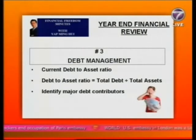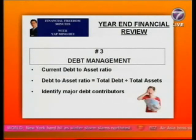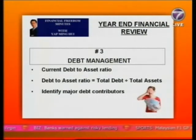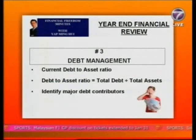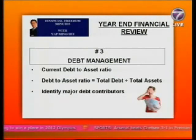The fourth checkpoint is insurance planning. At the beginning of the year you may have intended to cover yourself for $100,000 for critical illness, but your current coverage is only $30,000. You want to review at year-end whether you have actually covered yourself for $100,000. If not, go and get insurance coverage to increase to the ideal level to provide sufficient coverage for your family.